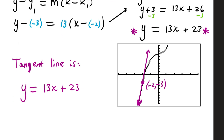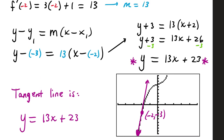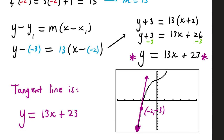I took another screenshot. This is the graph of f of x. I go to the point (-2, -3), put a dot on the graph, and draw a tangent line so it touches the graph at that specific point. This particular line has a slope of 13, and if we go up to the y-axis, it would hit at 23.